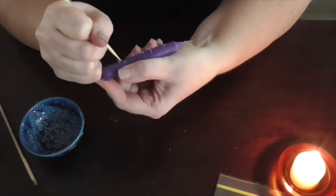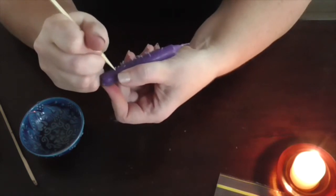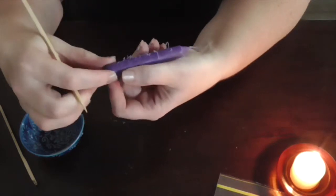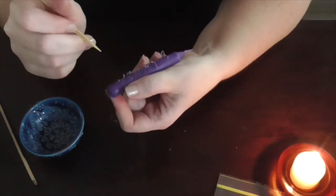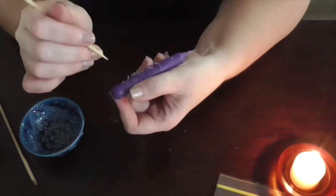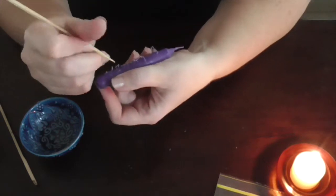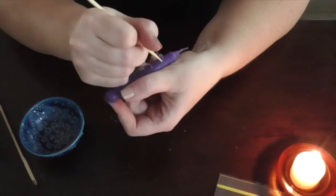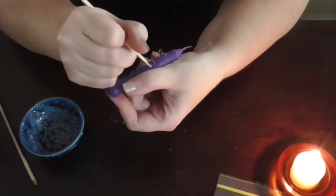So you can do this with a bolline, which is usually a white handled knife, or some kind of instrument that you will use for carving. I'm using another one of these little skewers just for ease.